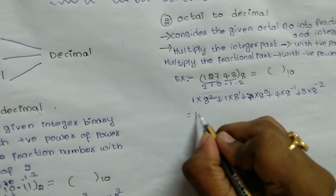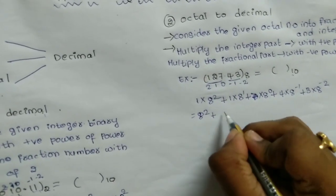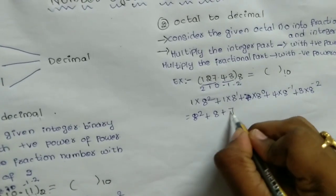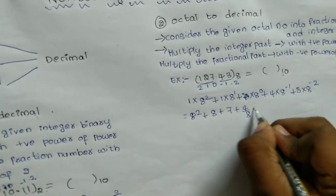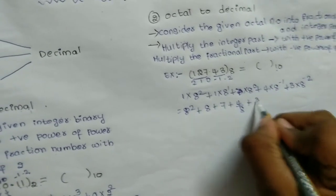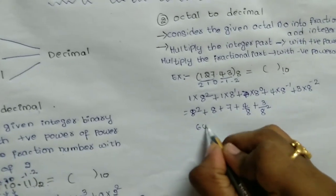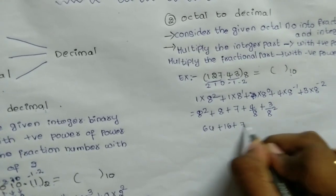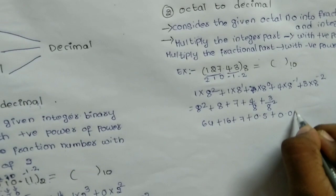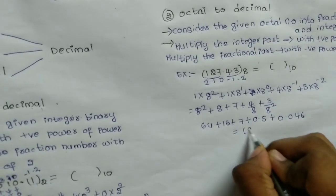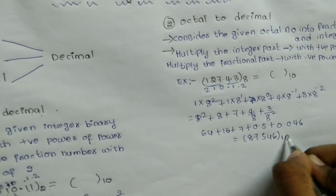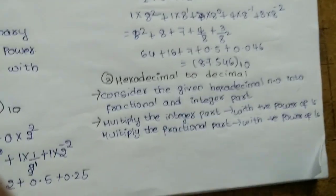Now we simplify: 8² = 64, plus 8, plus 7 × 1 = 7, plus 4/8, plus 3/64. Simplifying in decimal: 64 + 16 + 7 + 0.5 + 0.046.